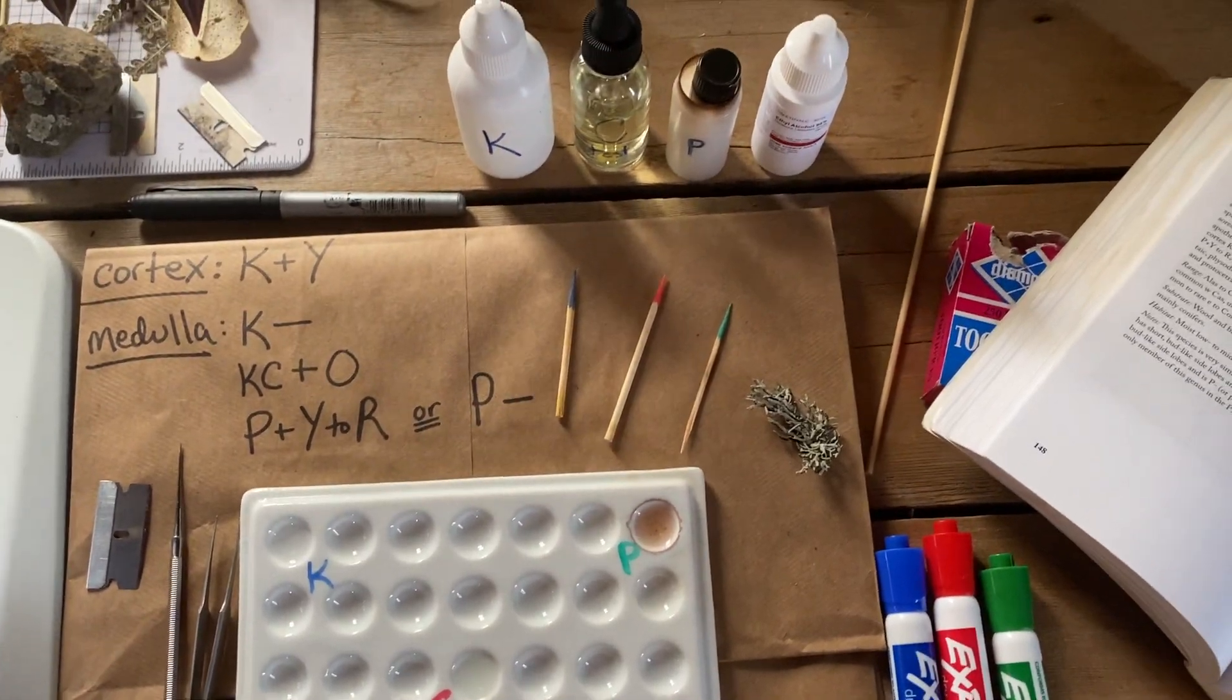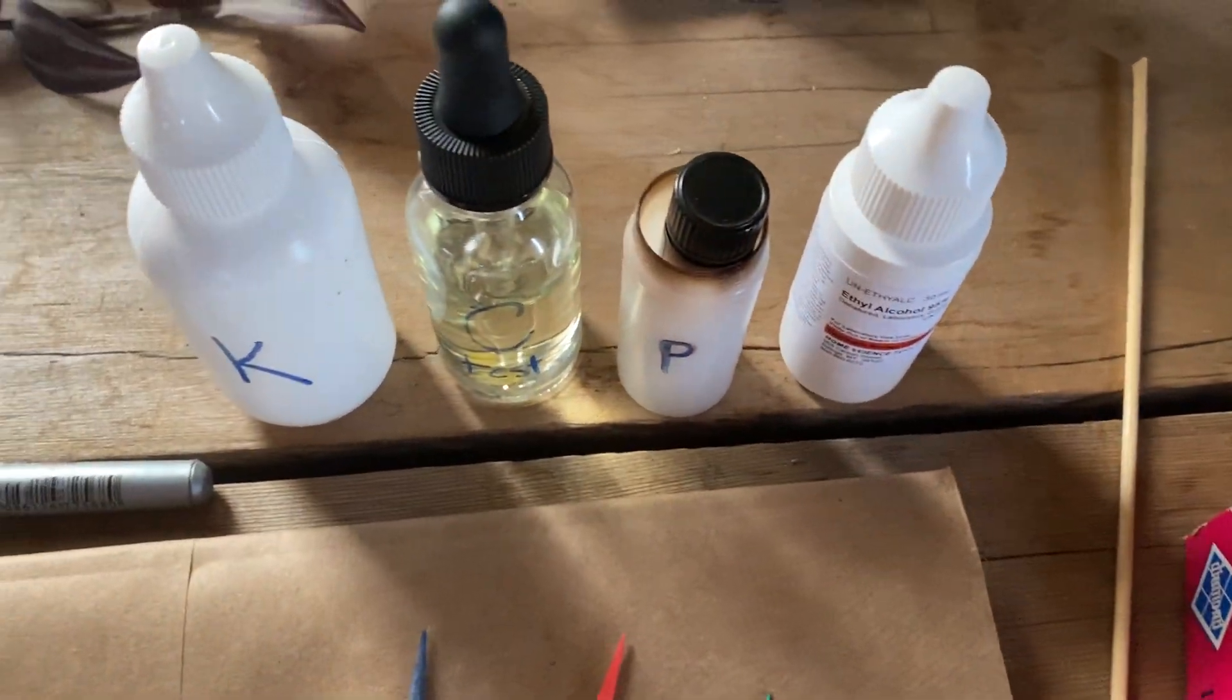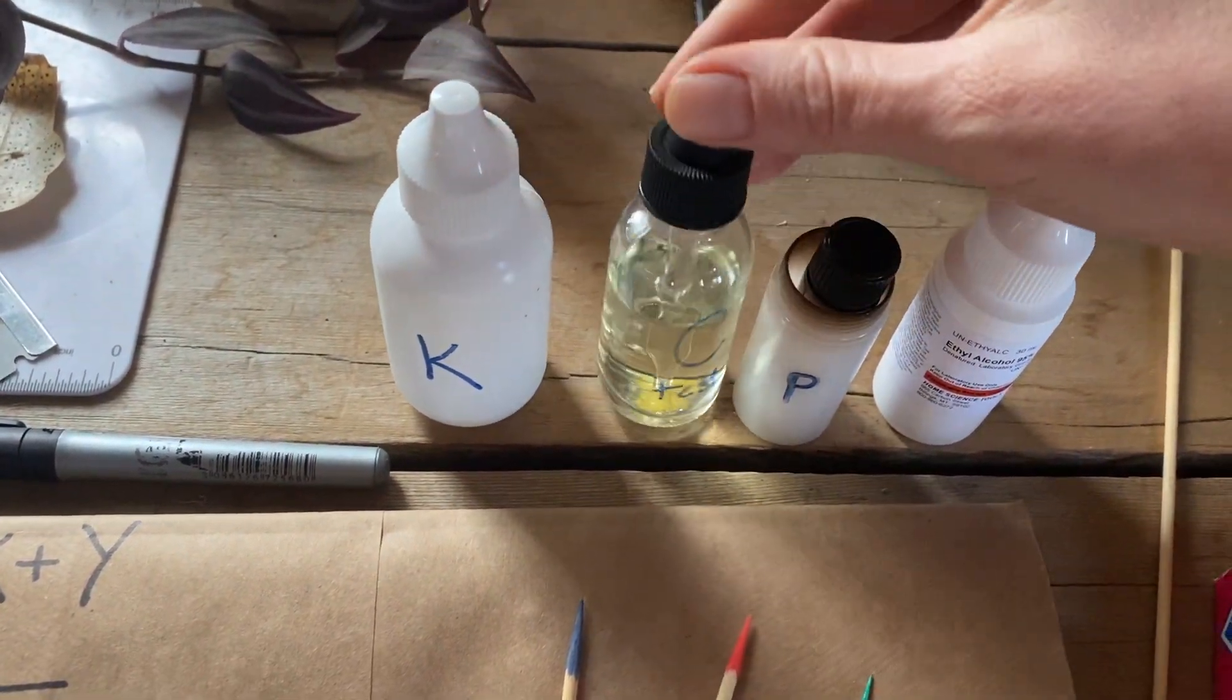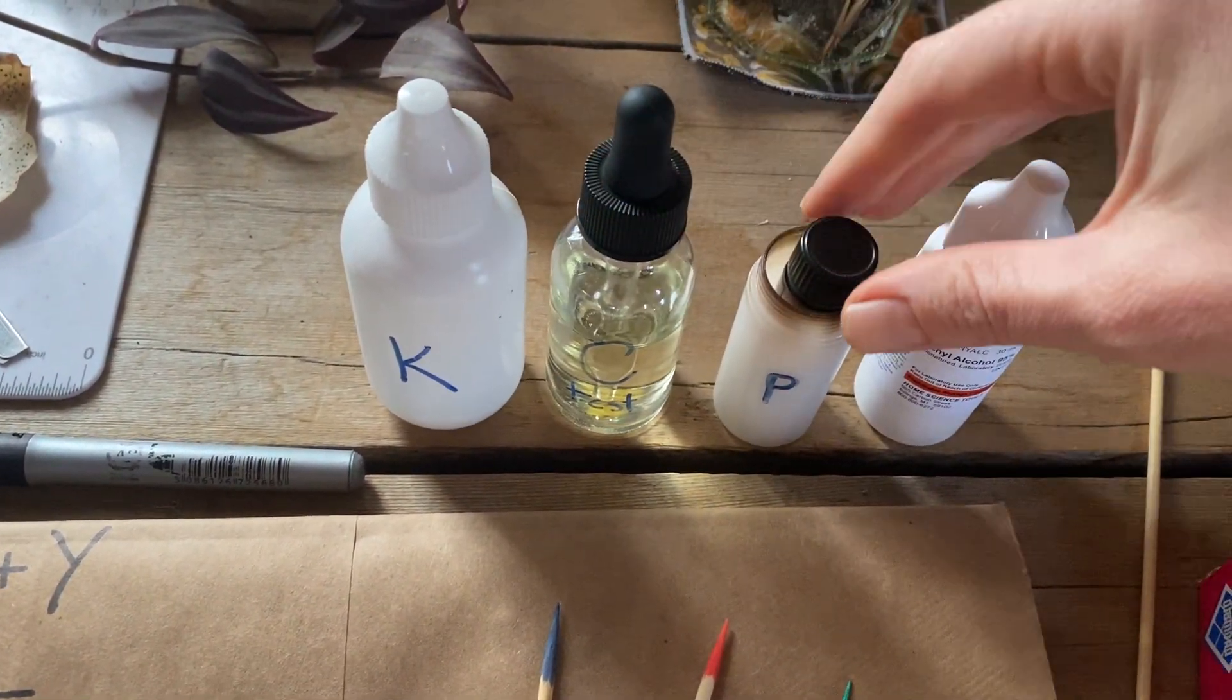There are three main types of chemical spot tests used by lichenologists. And those are the K test, the C test, and the P test.